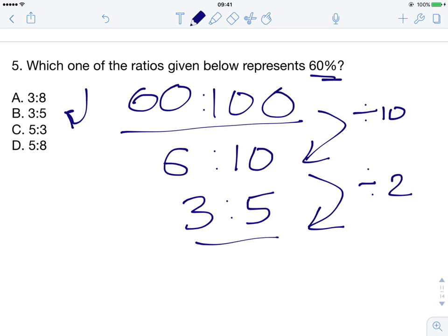So the ratio represented by 60% is 3 to 5, which is option B. The answer is B.